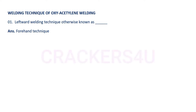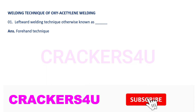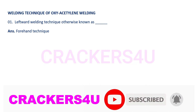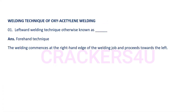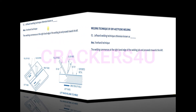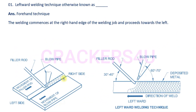Question number one: The leftward welding technique is otherwise known as the forehand technique. The welding commences at the right hand edge of the welding jaw and proceeds towards the left. In this picture we can see the welding start from the right side and move towards the left, and the positions of the blow pipe and filler rods.